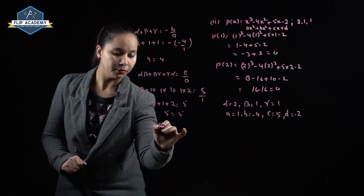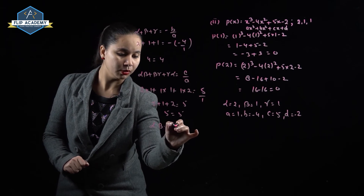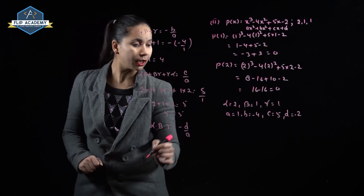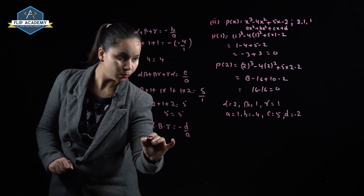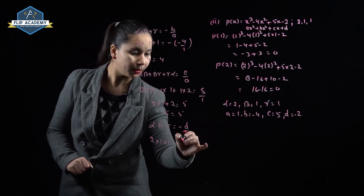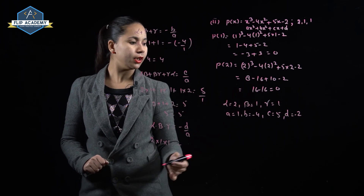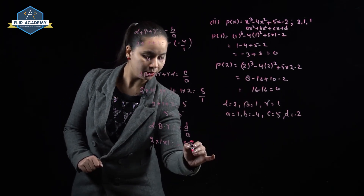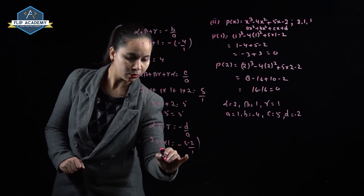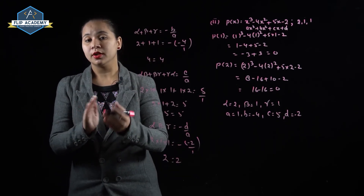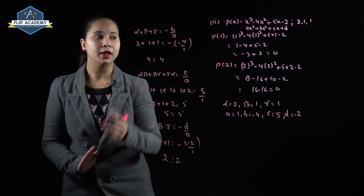Next, α × β × γ = -d/a. Substituting: 2 × 1 × 1 = -(-2)/1 = 2. So 2 = 2. It means 2, 1, 1 are the zeros of this polynomial, and the second part is completed here.